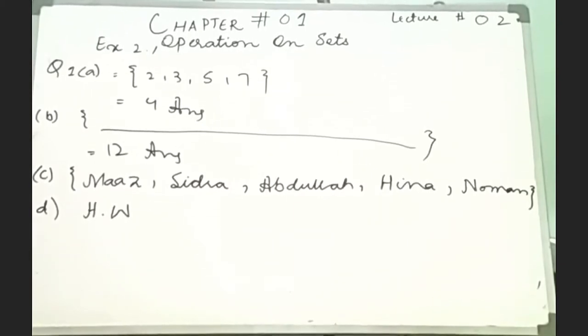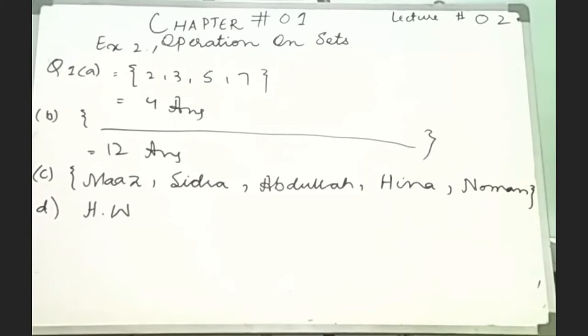See question number 1 part A. Find the number of elements in a set of prime numbers less than 11. How many prime numbers are there? 2, 3, 5, 7. How many are there? Four. The answer is 4.